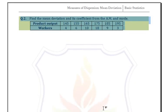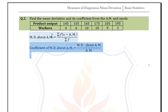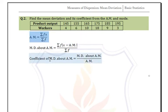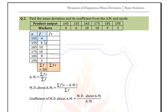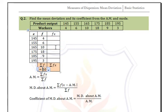Now we have a frequency distribution example where we need to find mean deviation and its coefficient from the arithmetic mean and mode. The formula for mean deviation about arithmetic mean is summation of f × |x - arithmetic mean| divided by summation f. The coefficient of mean deviation about arithmetic mean equals mean deviation divided by arithmetic mean. The formula for arithmetic mean in frequency distribution is summation fx divided by summation f.